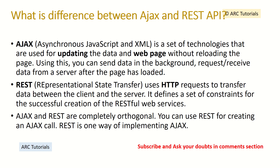What is the difference between AJAX and REST API? AJAX stands for Asynchronous JavaScript and XML. It is a technology using the XHR (XMLHttpRequest) object to send data from client to server. REST uses HTTP requests to transfer data between client and server. AJAX and REST are completely different — they are orthogonal. You can use REST to create an AJAX call; REST is a one-way implementation of AJAX. This difference is often asked in interviews.